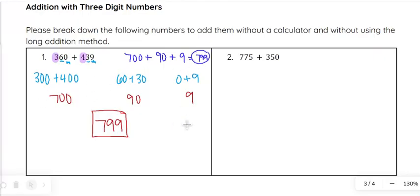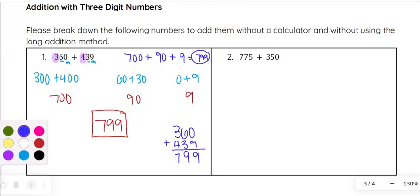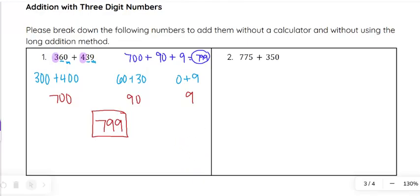That saves us from doing that vertical line up of the numbers. In this case, you didn't have to carry much, but sometimes it does save you that time to be able to not have to write it out as long addition. Same with 775 plus 350.